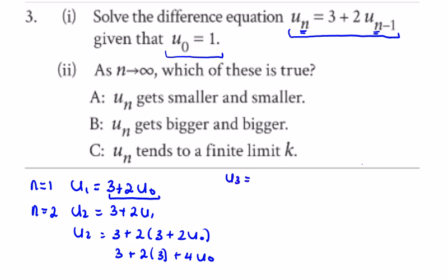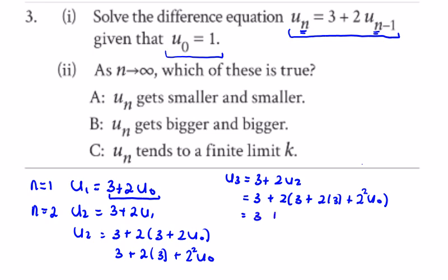When n is equal to 3, u₃ is going to be 3 plus twice u₂, which is 3 plus twice (3 plus 4 times u₀). I'm going to rewrite that 4 as 2² so we can see the pattern in terms of n. So u₃ is 3 plus twice 3 plus 2² times 3 plus 2³ times u₀.